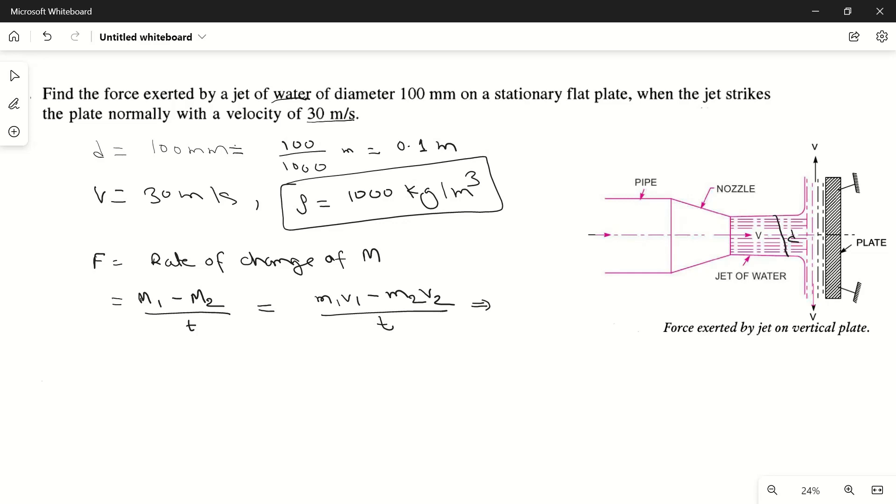Initial and final mass are the same because flow rate from this jet is constant. So mv1 minus mv2 divided by t, which will be equal to m by t times v1 minus v2, which will be equal to mass flow rate which we write as m dot times v1 minus v2.